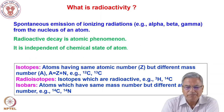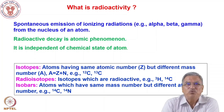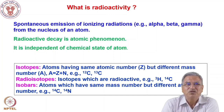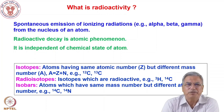Let us come to the first question: What is radioactivity? Radioactivity essentially involves a spontaneous emission of ionizing radiations like alpha, beta, and gamma from the nucleus of an atom. So, you can say radioactivity is an atomic phenomenon and it is independent of the chemical state of an atom.